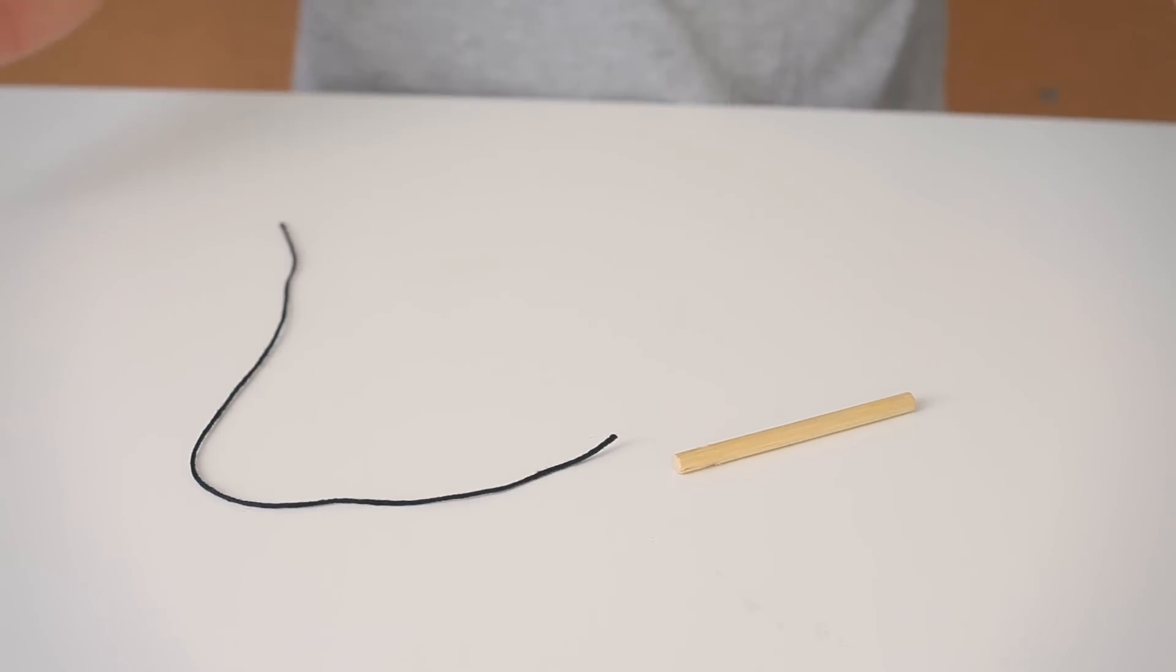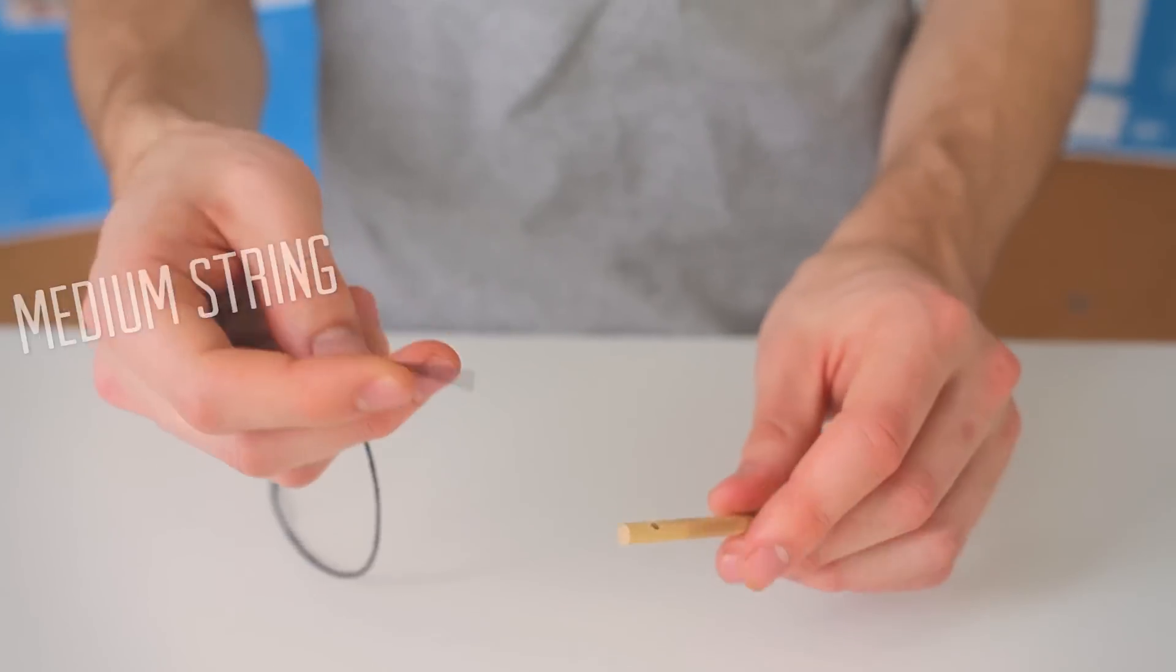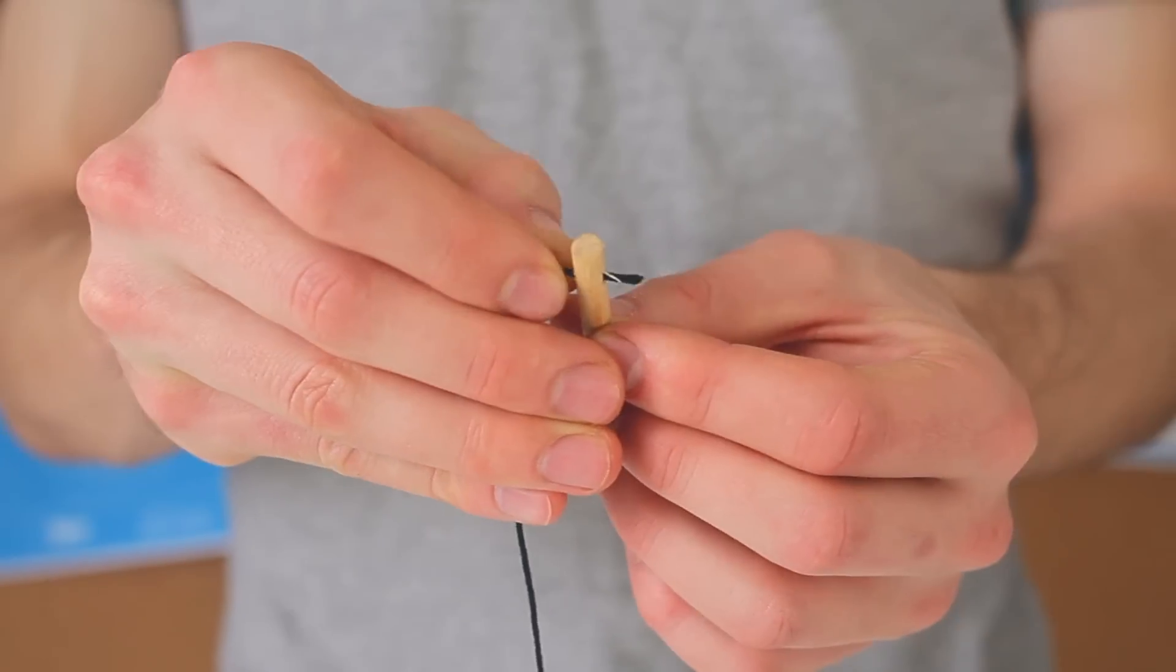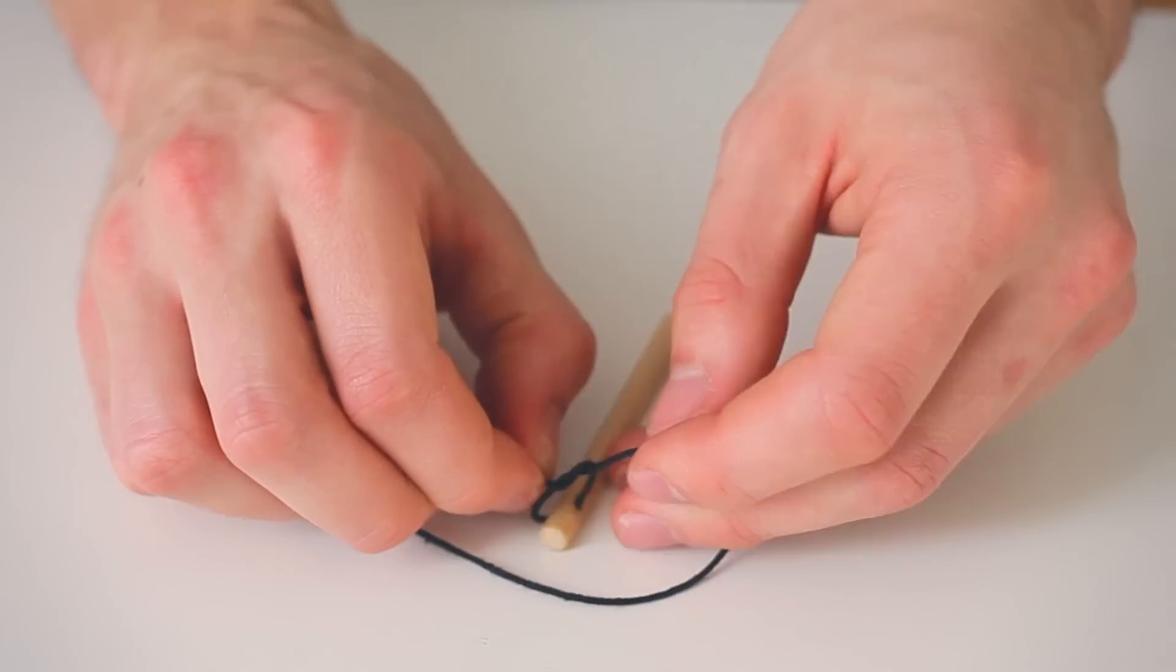Last thing we're going to do is make our firing pin. This is super simple. Just take your medium string and your firing rod, poke the string through the hole and then tie a knot and you're done.